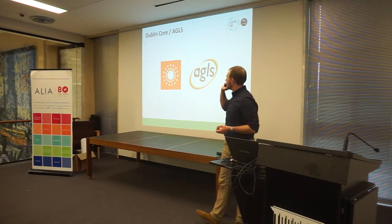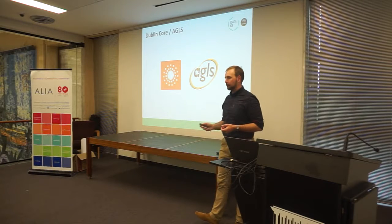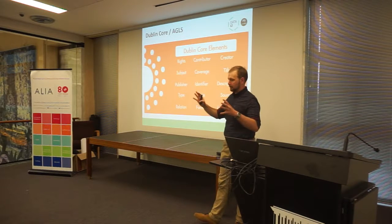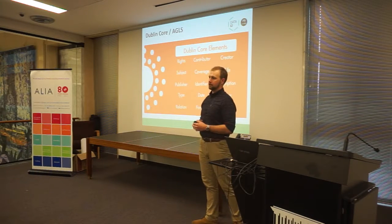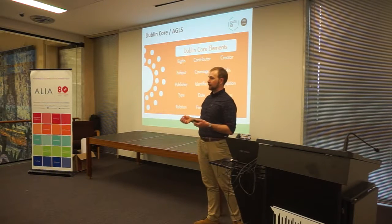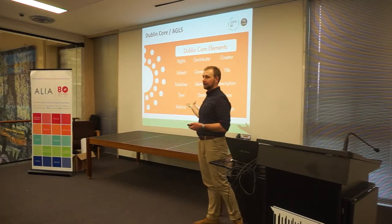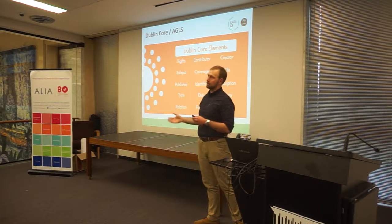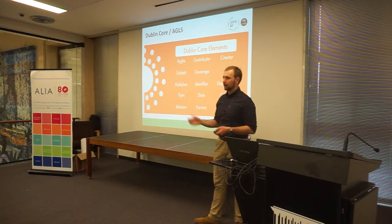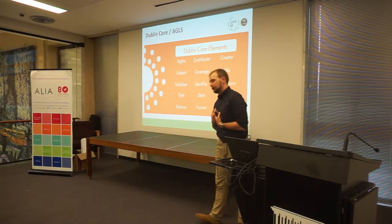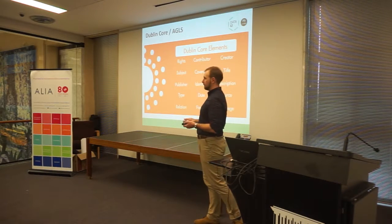Dublin Core is basically the most basic of information standards. If you have a resource, please give me these 15 items. If you've given me those 15 items, you'll have a pretty good idea of what's in there. AGLS is the Australian Government Locator Service — the Australian branded version of Dublin Core effectively for government resources that the National Archives put out. But again, effectively the same kind of stuff: who is it, where did it come from, am I allowed to use it, when did you collect it — all of these basic ideas.